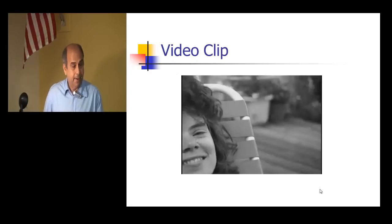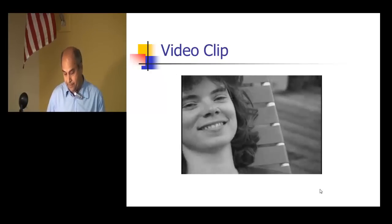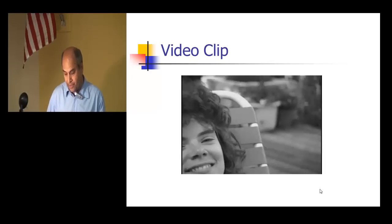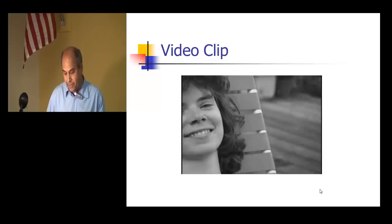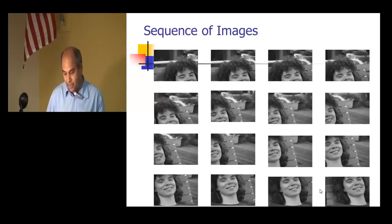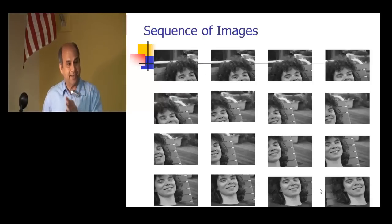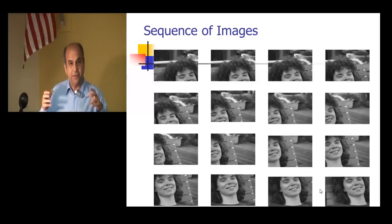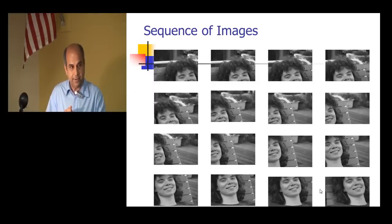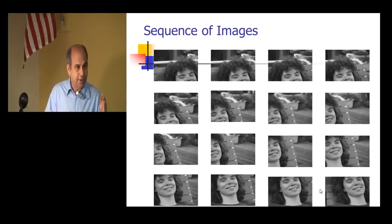In this video clip there are 16 images being shown in succession. When you see that, you start seeing the motion of the camera or the objects. That's the difference between a video and a single image.